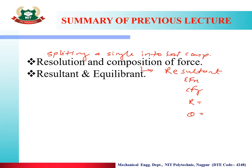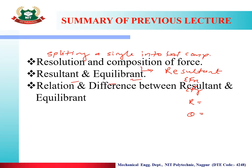We also covered resultant and equilibrium. Resultant is a single force that creates the same effect as all the other forces combined. Equilibrant is a force that keeps the body at rest. We saw the relation between equilibrant and resultant: they are equal in magnitude, opposite in direction, and collinear. A body always moves in the direction of the resultant force.